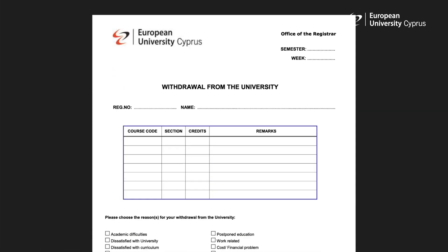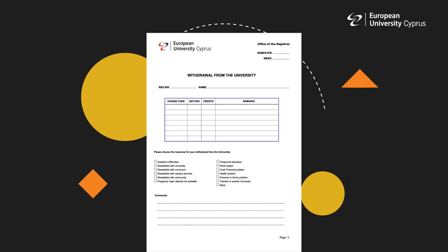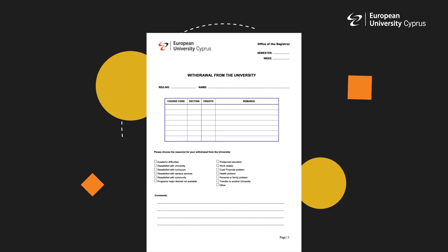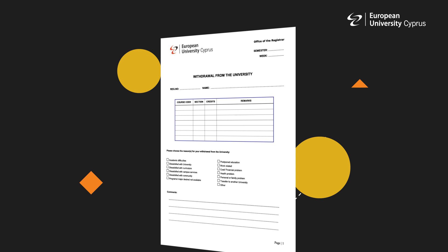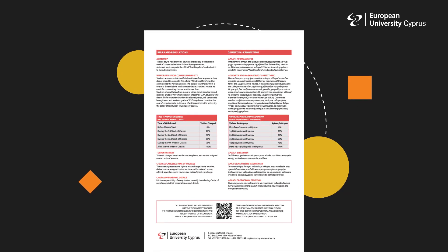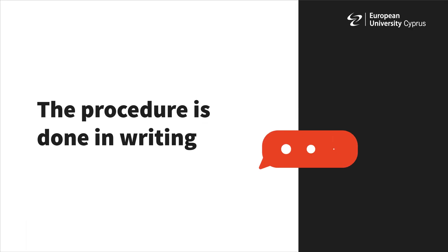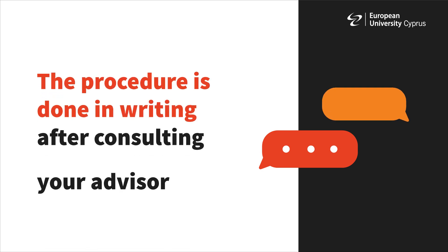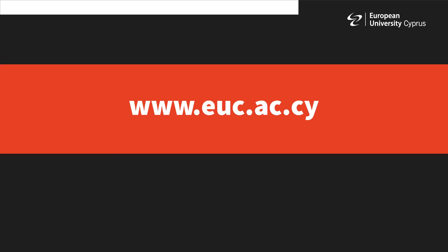If for any reason you wish to withdraw from the university, then the withdrawal policy applies. You can find it on the back side of your course schedule and on the university website. The procedure is done exclusively in writing after consulting your academic advisor.